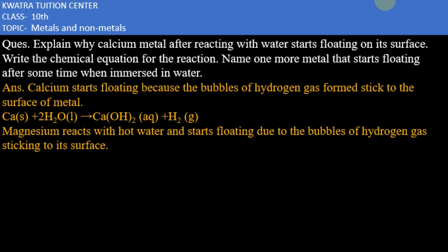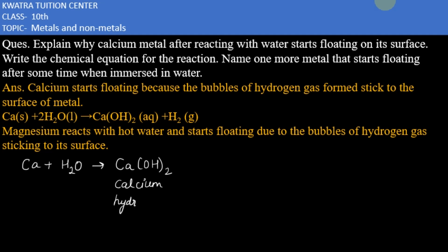When calcium metal reacts with water, it forms calcium hydroxide — Ca(OH)₂ — and hydrogen gas is released. This hydrogen gas starts sticking to the calcium metal, and that is why calcium starts floating on the surface.